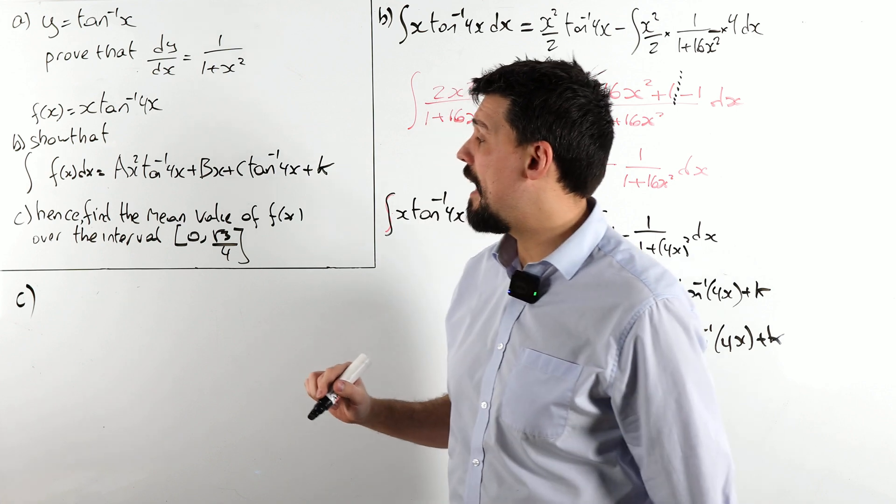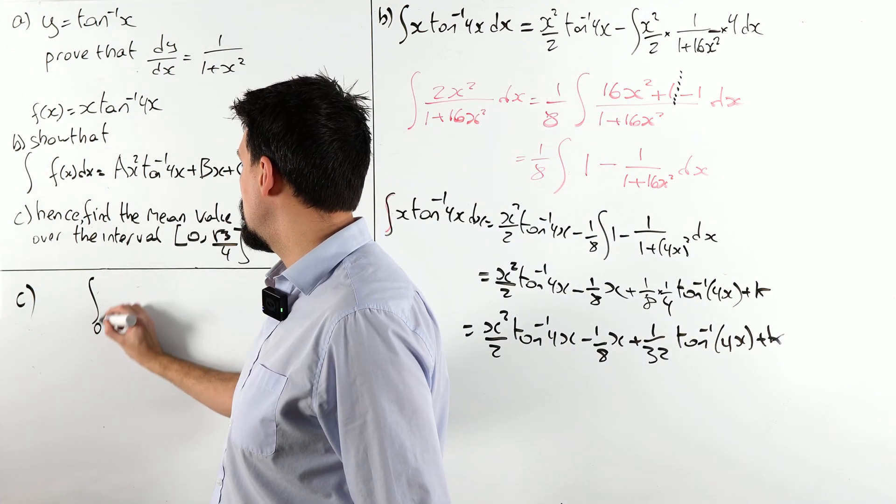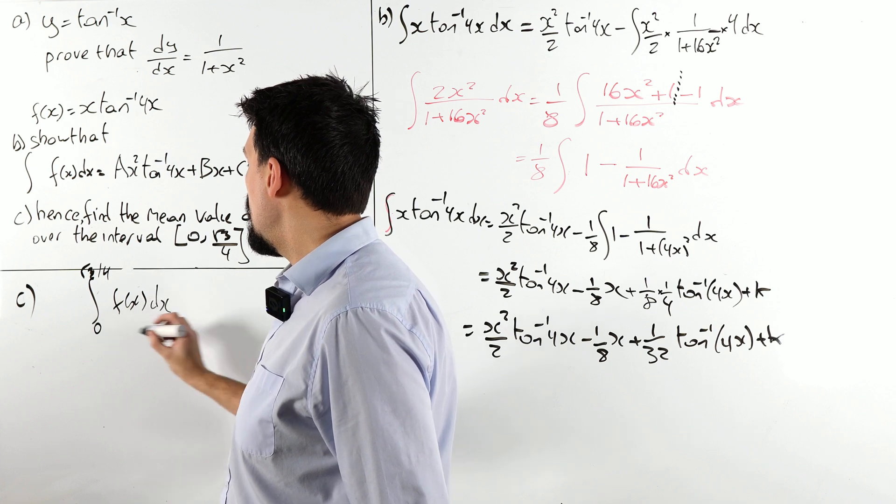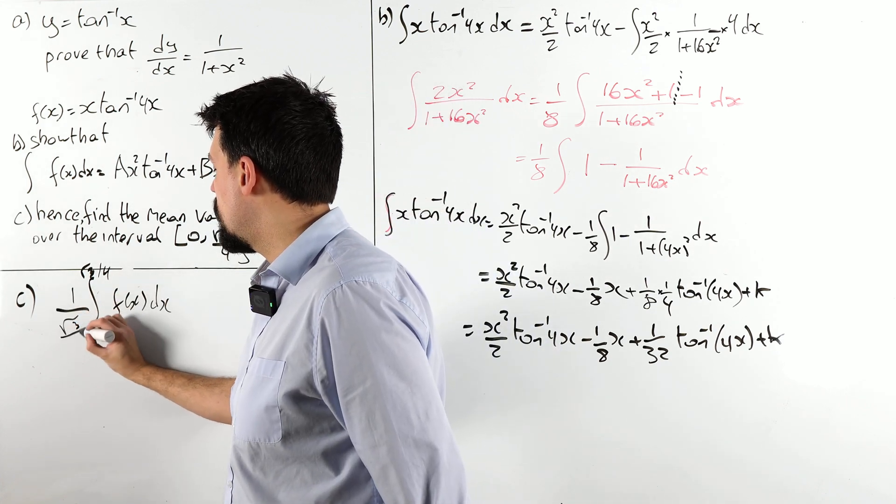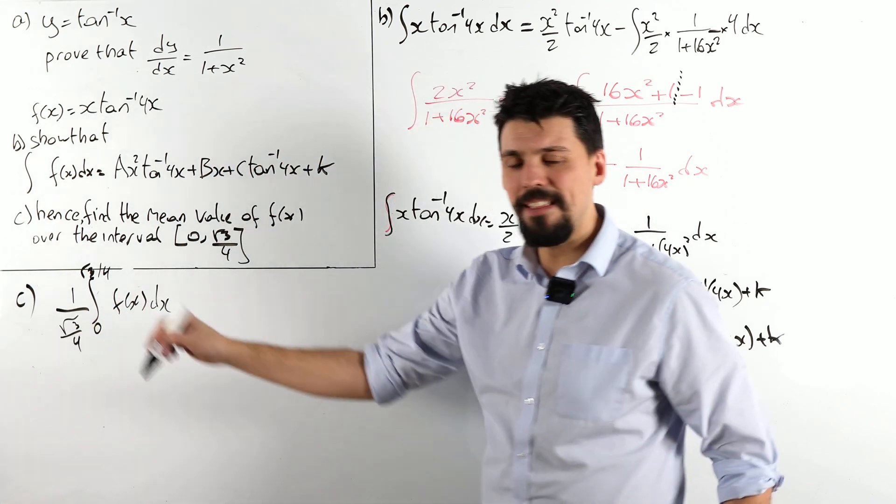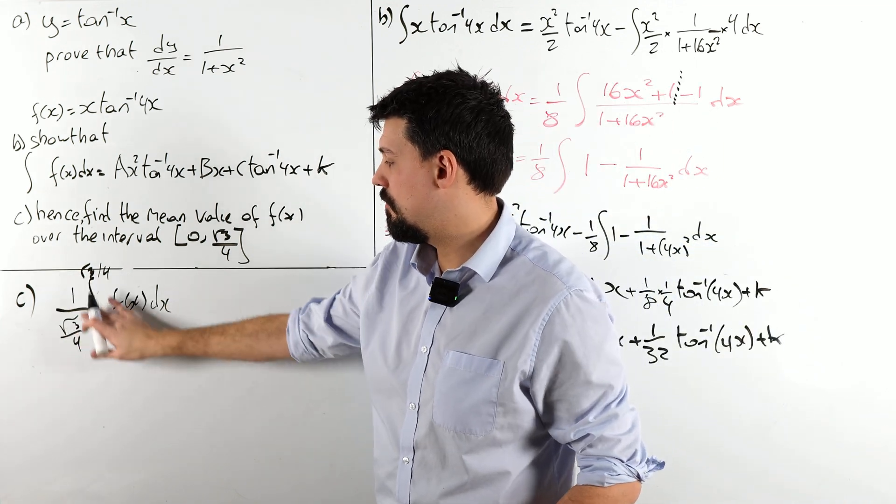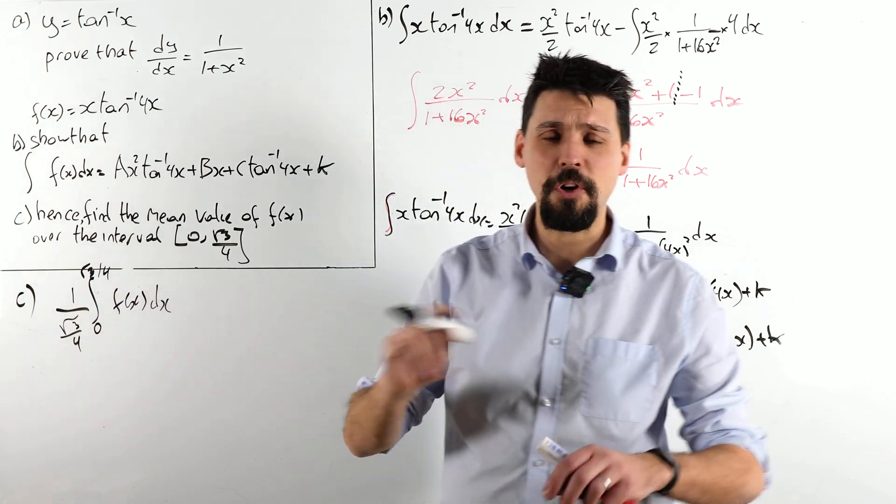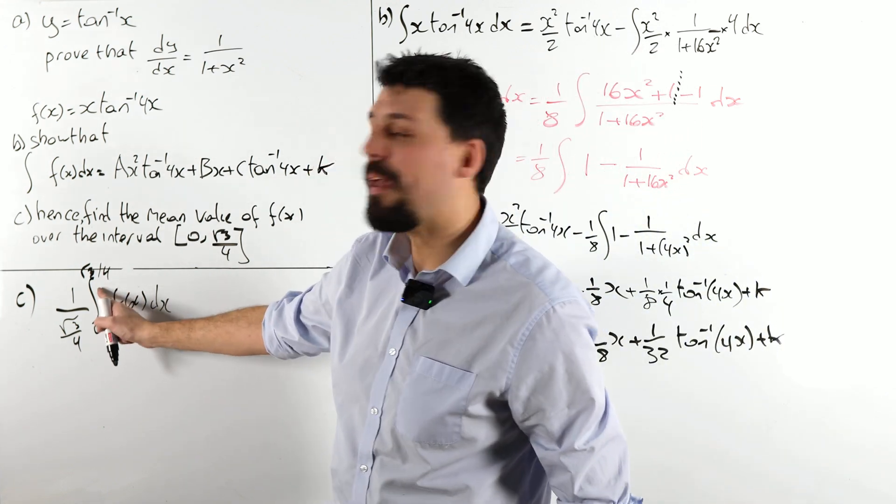So lucky I like you guys, right? Part c, we need to find the mean value. Well, all that is, is I need to integrate this function from 0 to root 3 over 4, and divide by the length of that, which is root 3 over 4. I'll tidy that up. This is heinous, right?